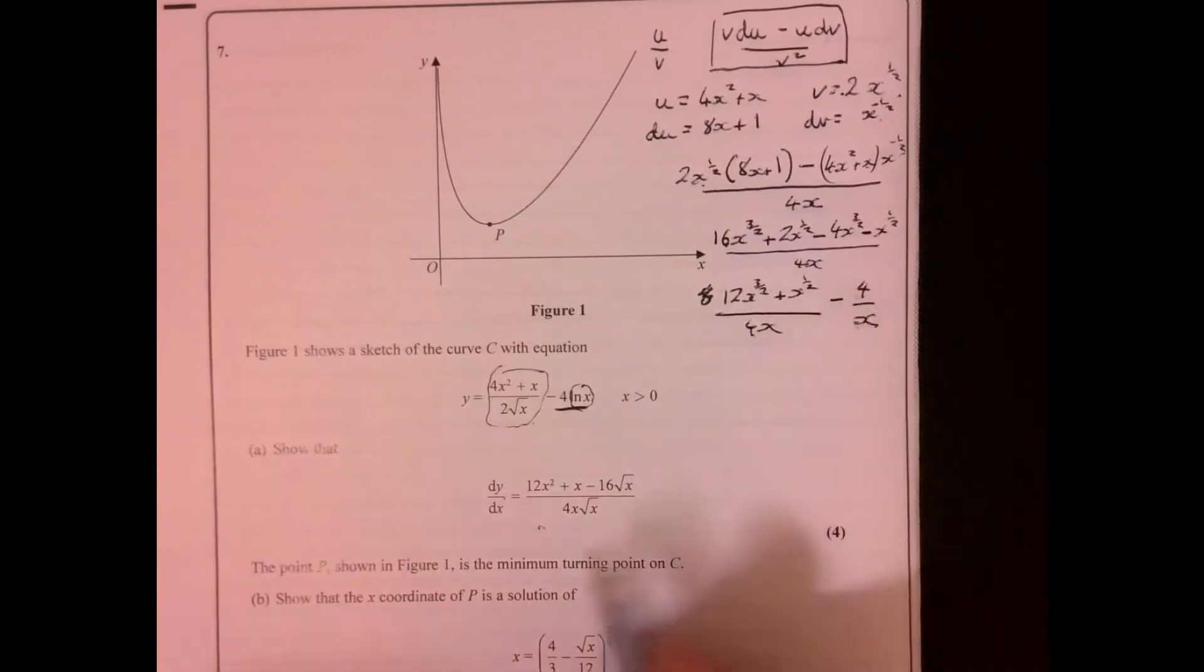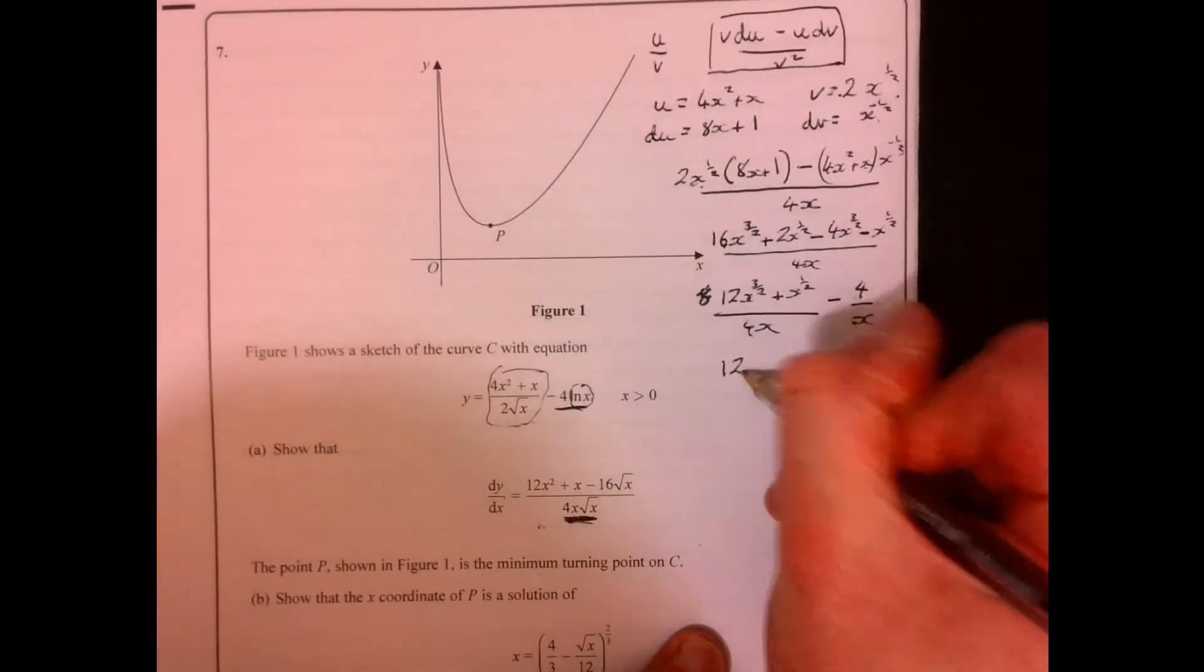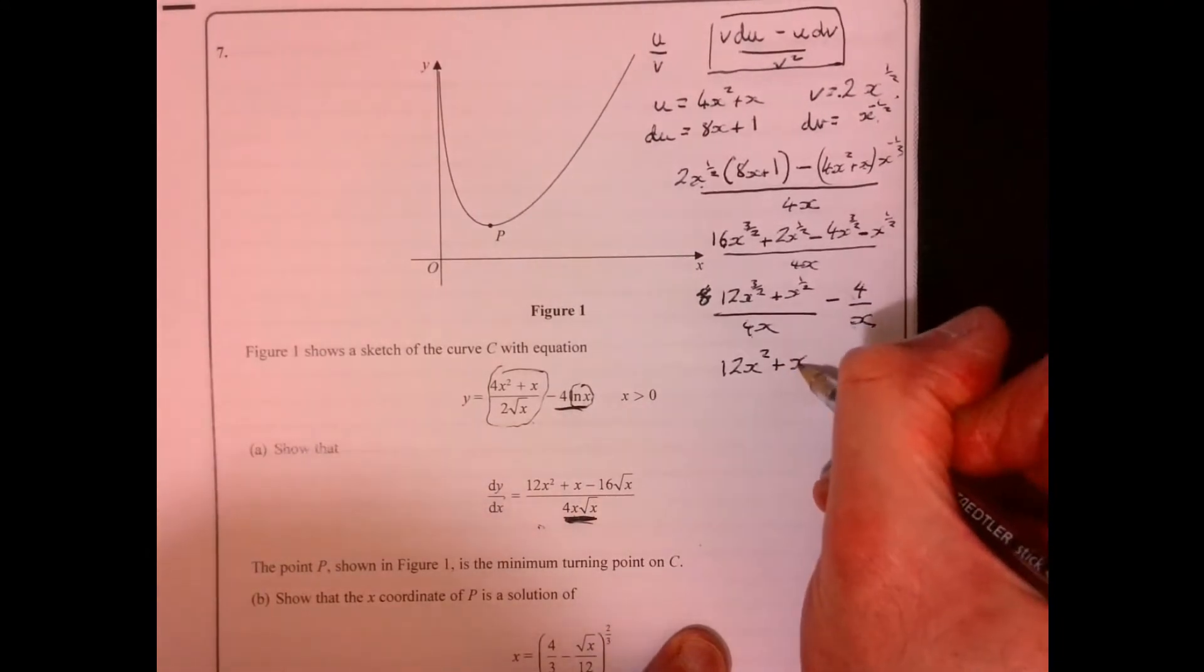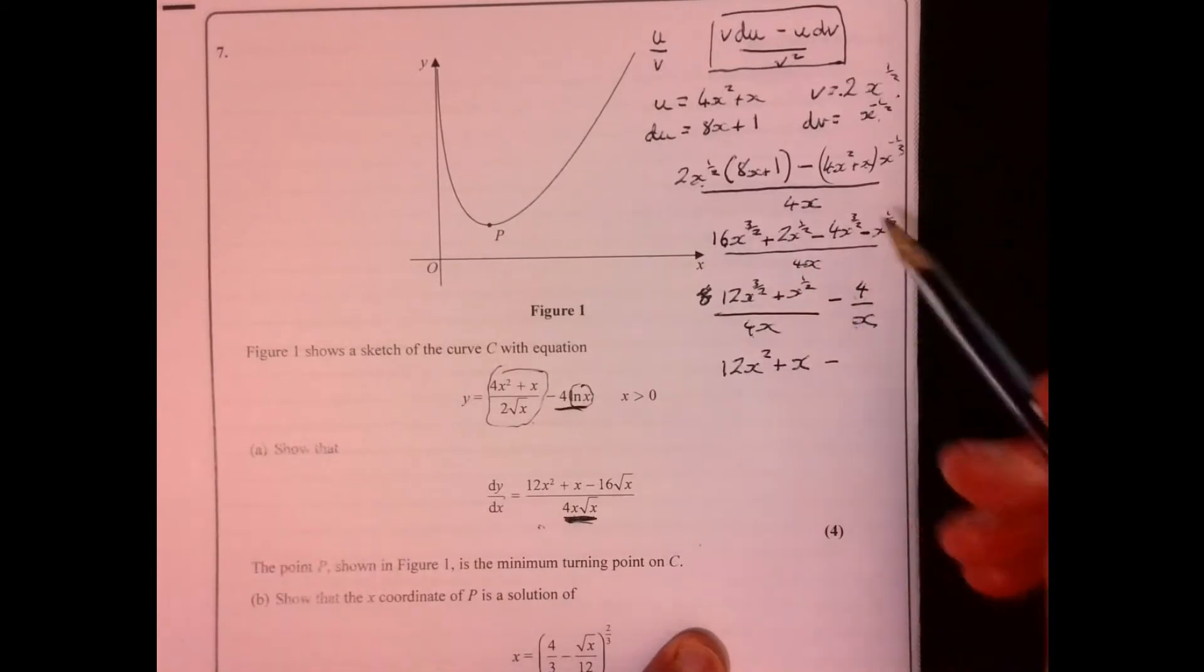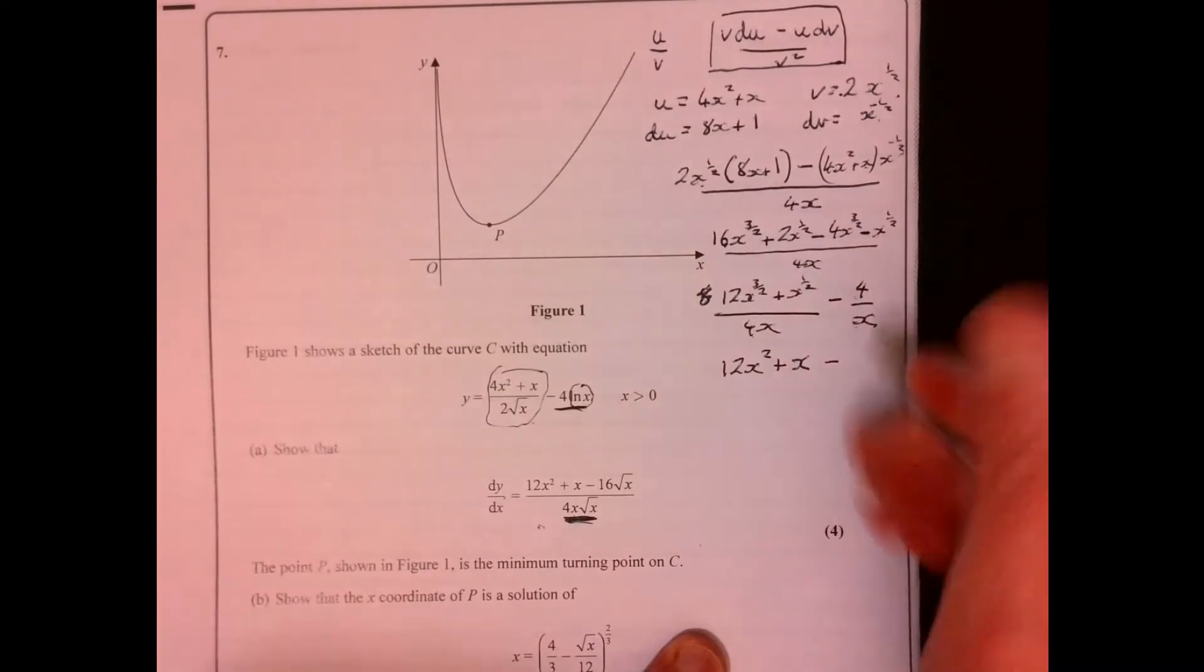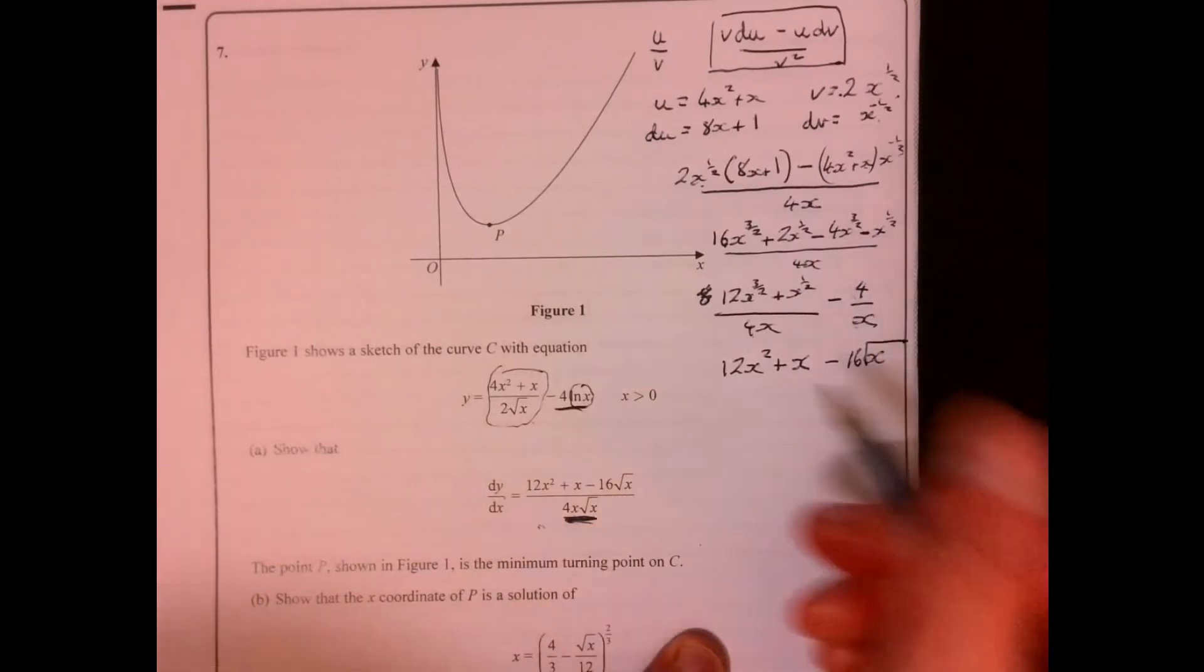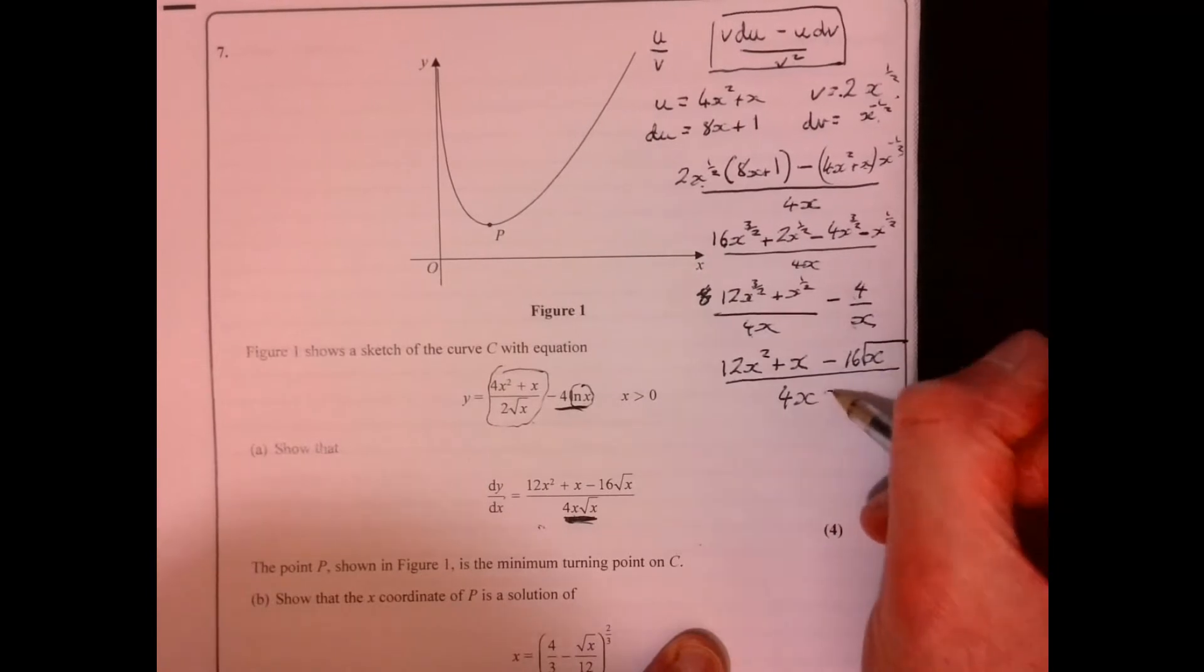So now we've got this here. I'm looking at this down here, thinking I need 4x root x on the bottom. So if I multiply top and bottom here by root x, that gives me 12x squared plus x. And then I'm going to do the same with this one, multiply top and bottom by 4 root x, so that gives me minus 16 over 4x root x. And then it's all over 4x root x.